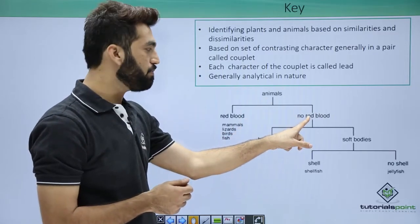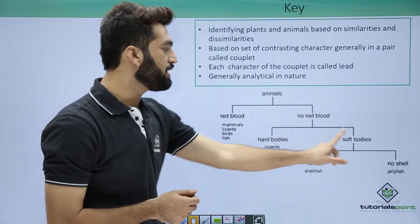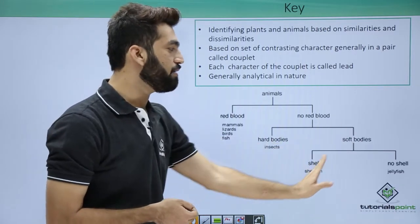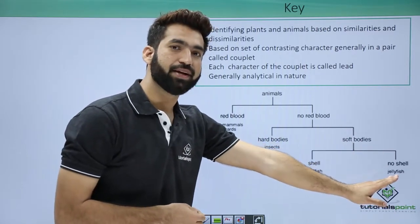Once it is non-red blood, it can be hard-bodied or soft-bodied. If it is hard-bodied, it can be an insect. If it is soft-bodied, it can have a shell or be without a shell.